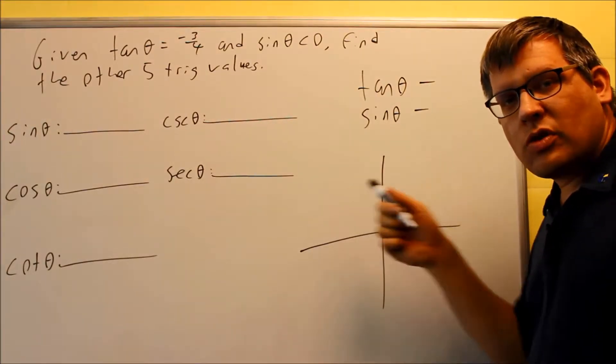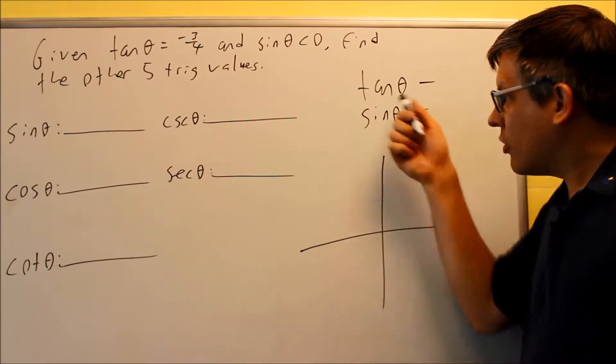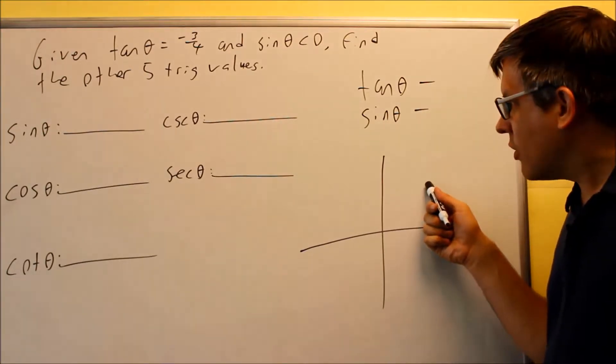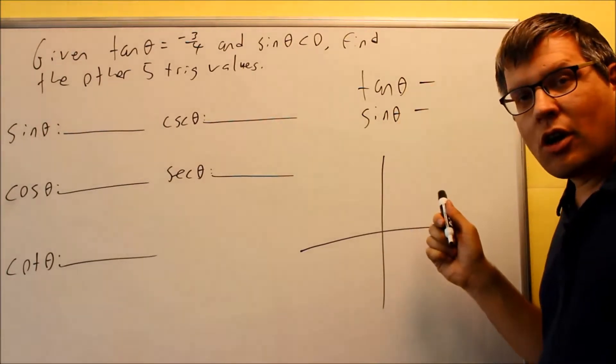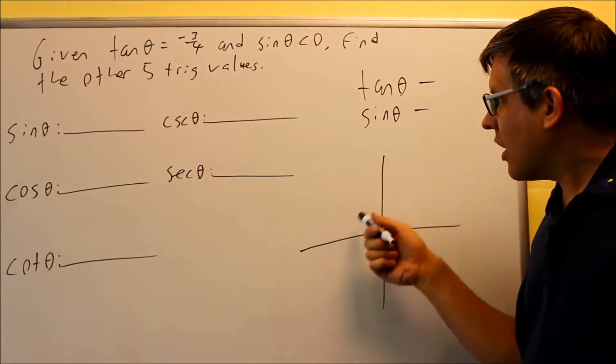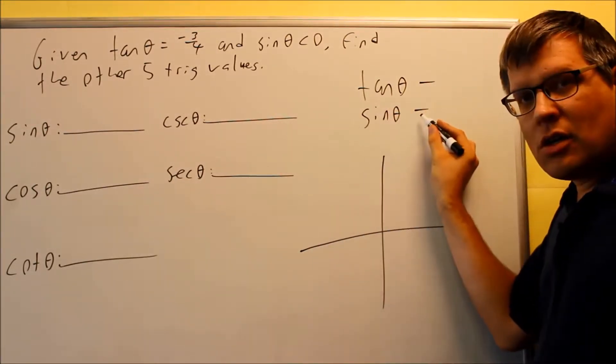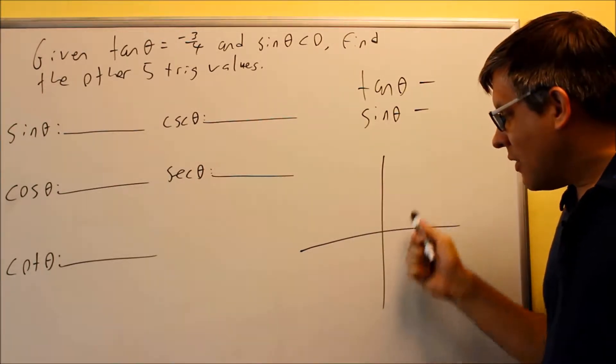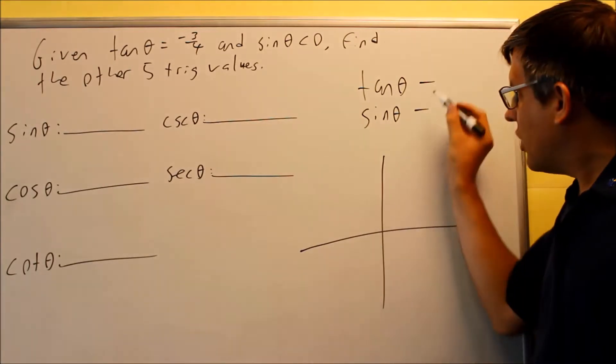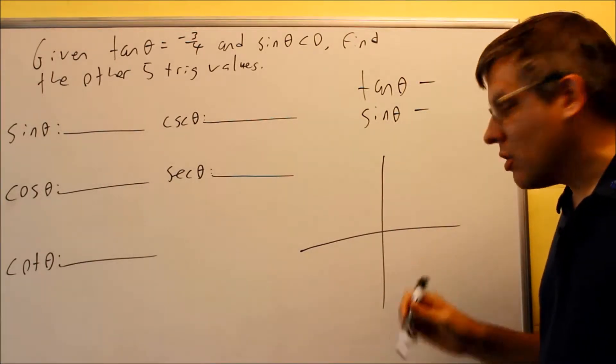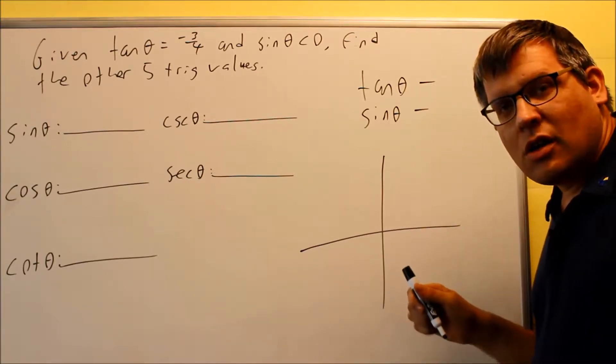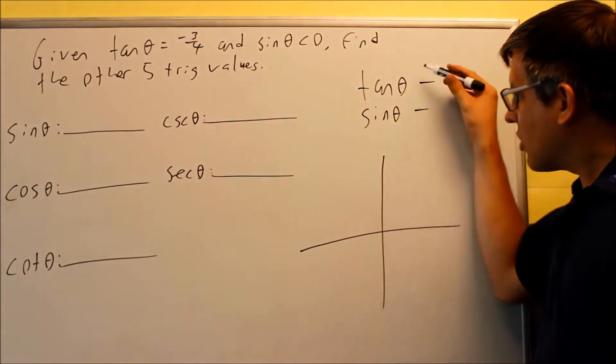We're going to use 'All Students Take Calculus' to find out which quadrant this belongs in. All means everything is positive in the first quadrant, not the right one in our case. S represents sine, sine is positive, everything else is negative. No, sine has to be negative here, so that's the wrong quadrant. Take means tangent is positive, everything else is negative. Well, tangent has got to be negative, so that's not the right quadrant either. Then Calculus represents cosine. Cosine would be positive, everything else is negative, which means that's the correct one.